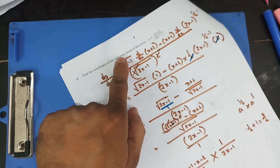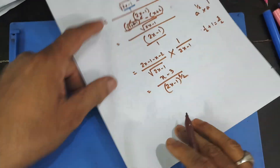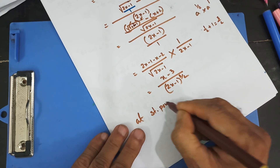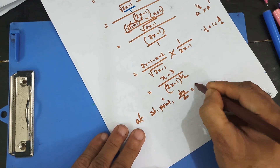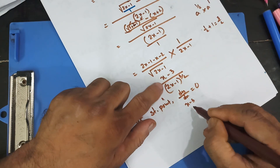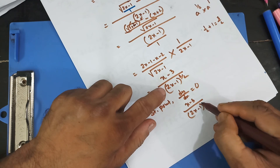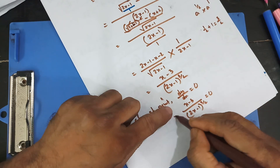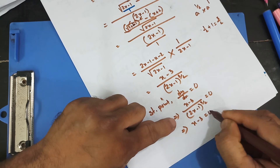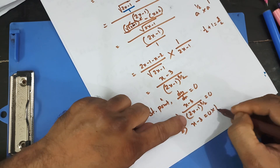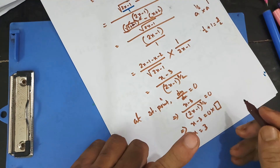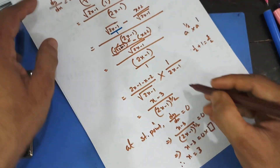But that's not the answer — the question says find the stationary point of the curve. At a stationary point, dy/dx equals 0. So (x − 3) divided by (2x − 1)^(3/2) equals 0. Taking the denominator to that side, therefore x − 3 = 0, multiplied by that equals 0. Therefore x = 3. I have the x-coordinate of the stationary point.